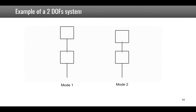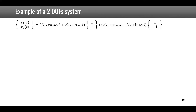Physically, the first mode means masses 1 and 2 are moving in the same direction and of the same amplitude. For the second mode, they are moving with the same amplitude but in opposite directions. Mode 1 shows both masses moving together; mode 2 shows them moving in opposite directions.